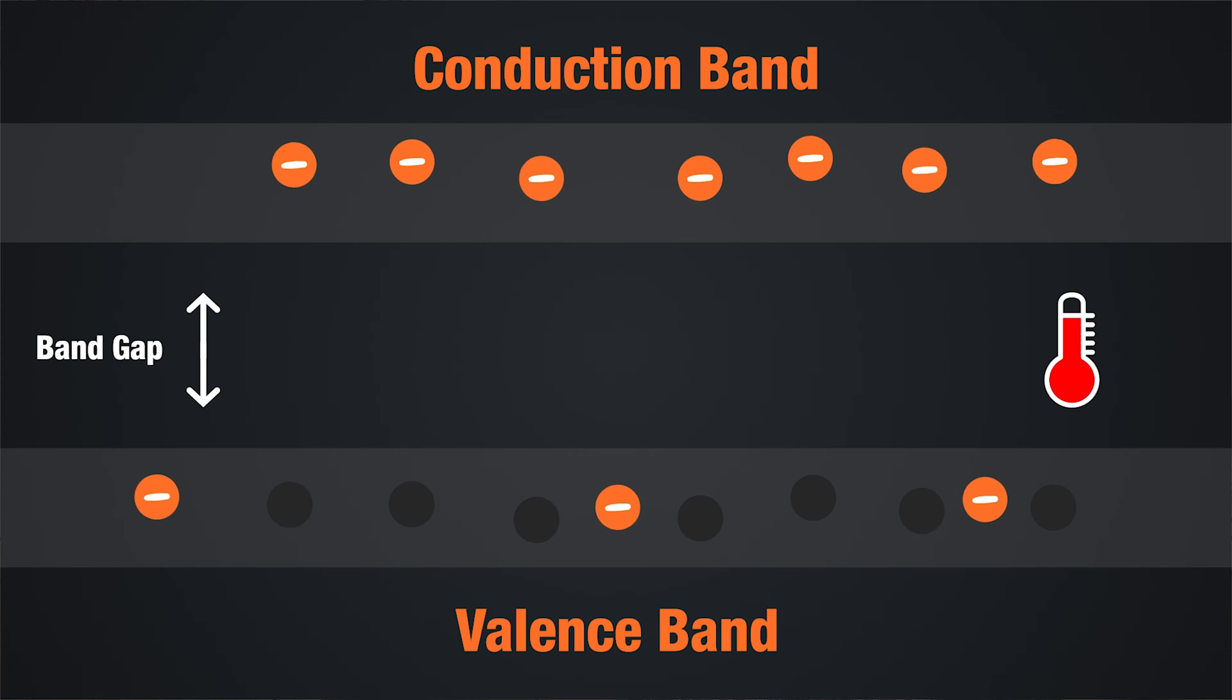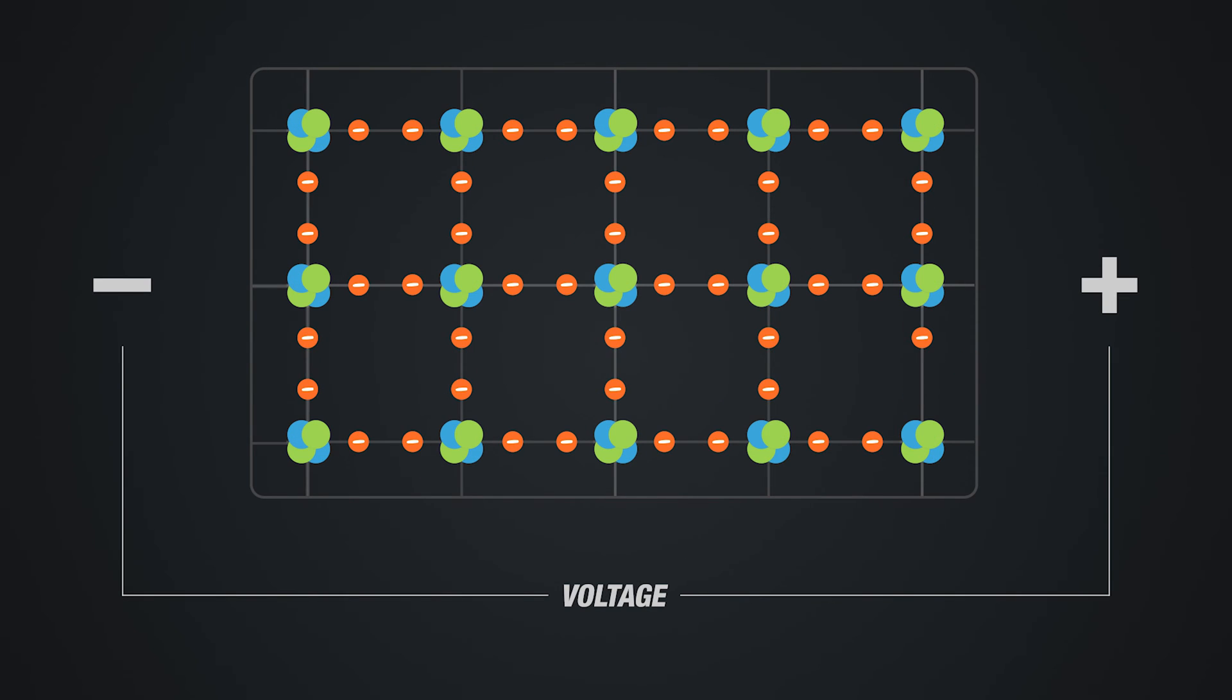Now these vacancies are known as holes. If we put a voltage source across an intrinsic silicon material, the thermally generated free electrons in the conduction band will be attracted to the positive end of the voltage source. They will move towards the positive end and this movement produces current in the material. This type of current is called electron current.